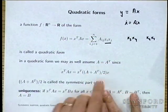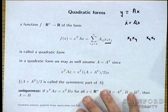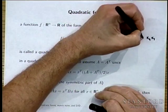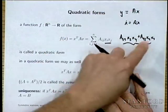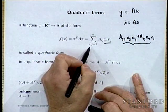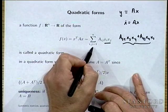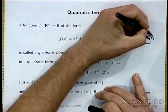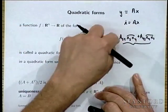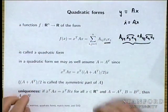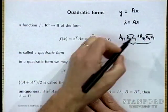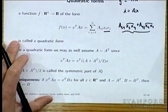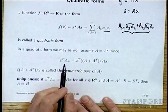You can just as well assume that A equals A transpose. The coefficients A_34 and A_43 contribute the same way, so you can replace both with their average. In matrix language, X transpose AX equals X transpose times (A + A transpose)/2 times X.